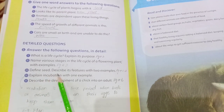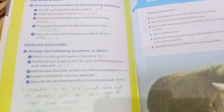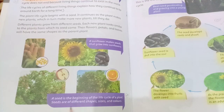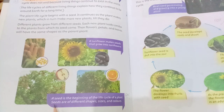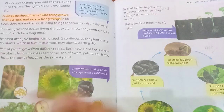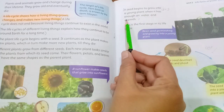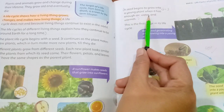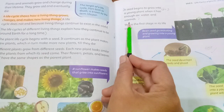Define seed and describe its features with two examples. A seed is the beginning of the life cycle of a plant. Seeds are of different shapes, sizes, and colors. A seed begins to grow into a young plant when it has enough air, water, and warmth.